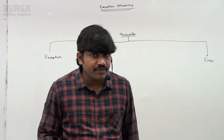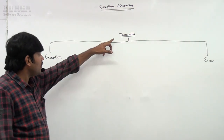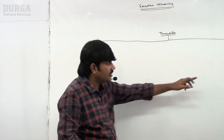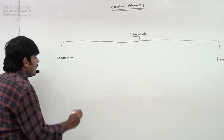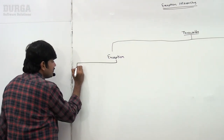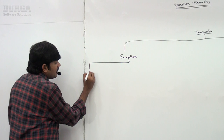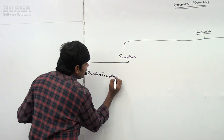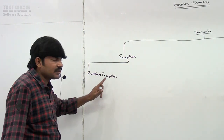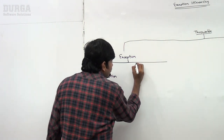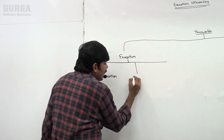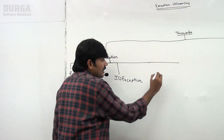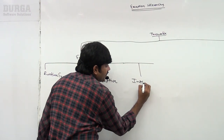Under Exception, there are several child classes. The important ones are: RuntimeException, IOException, and InterruptedException — which is very important in multi-threading.